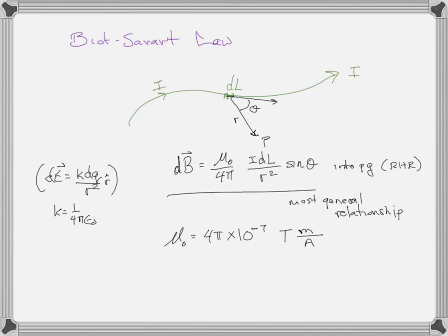μ₀ has the value 4π × 10⁻⁷ tesla·meter per ampere. Those are its MKS units. μ₀ is called the permeability constant — specifically the permeability of free space, just like ε₀ is the permittivity of free space. μ₀ describes how the material the magnetic field is in affects it: in free space we use μ₀, but in water for example we'd use μ for water.